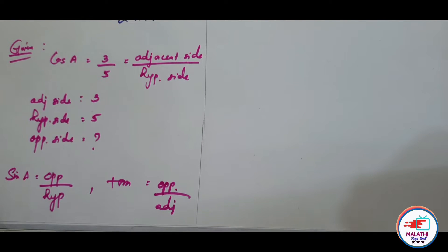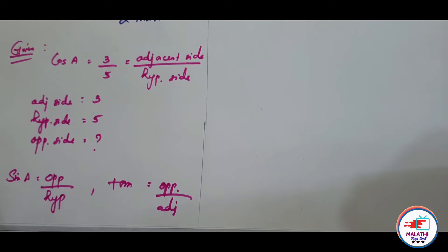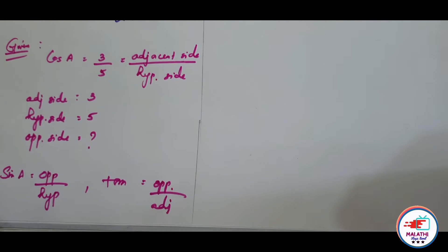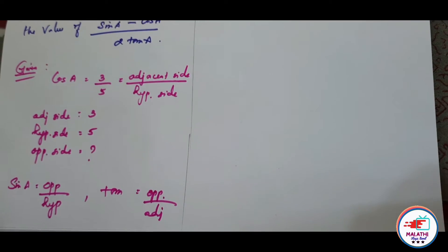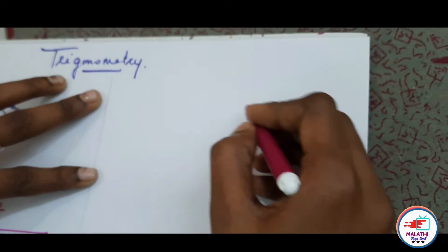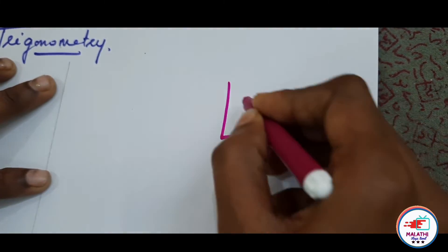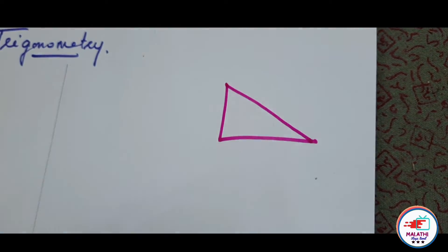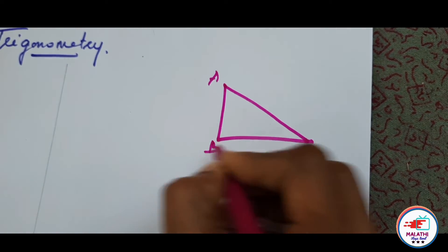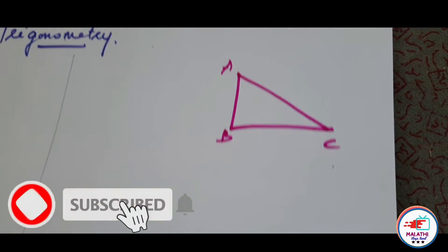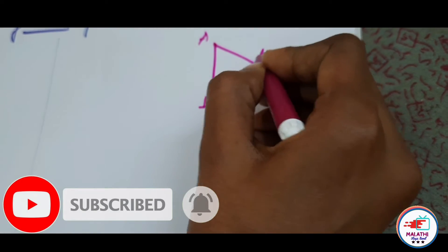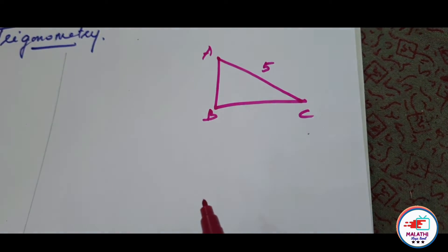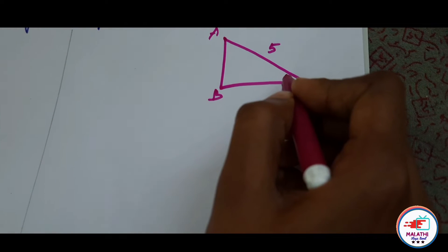The opposite side is the opposite side. How do I find the opposite side? By using the Pythagoras theorem, I can find the opposite side. So let's make a triangle. I draw a triangle, naming it ABC. The hypotenuse value is 5 — the longest side is 5. I am writing 5 for the hypotenuse side. Next, I am adding the angle here. This is the opposite side.